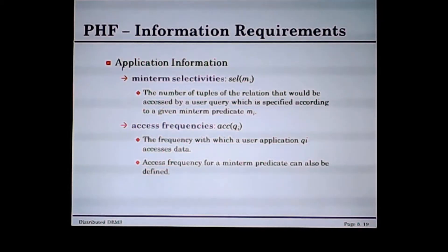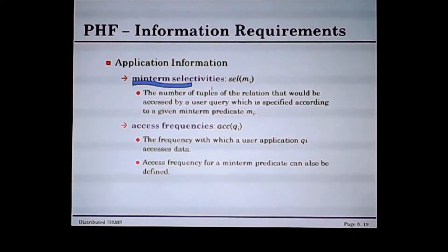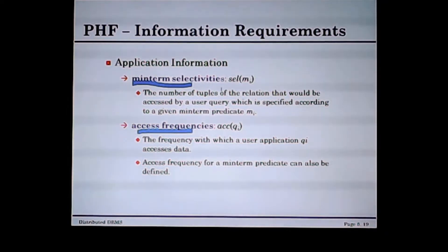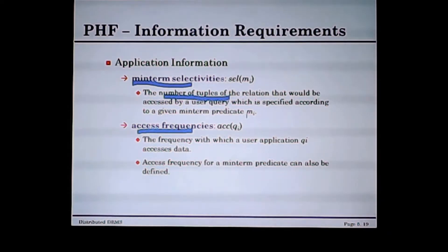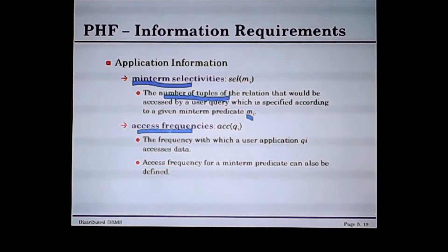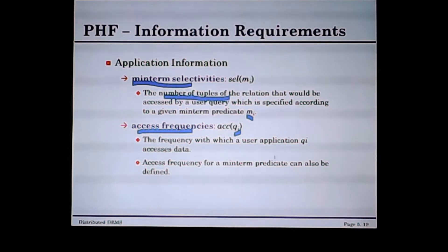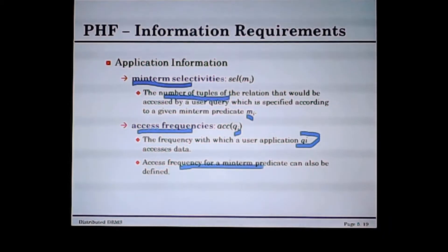In application information, I define two other main concepts: minterm selectivity, abbreviated as sl(mi), and access frequency, abbreviated as acc(qi). Minterm selectivity is the number of tuples of a relation that would be selected according to a given minterm predicate mi. Access frequency is how frequently a user application query qi accesses data within a duration of time. Access frequency for a minterm predicate can also be defined.